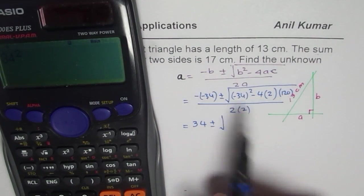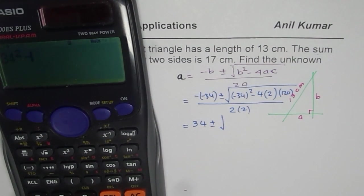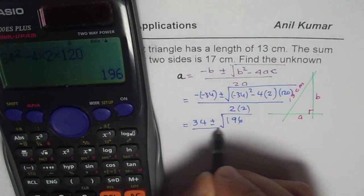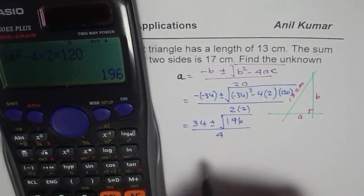So when you square a negative quantity, it becomes positive. So I am writing 34² - 4(2)(120). So that gives us 196.